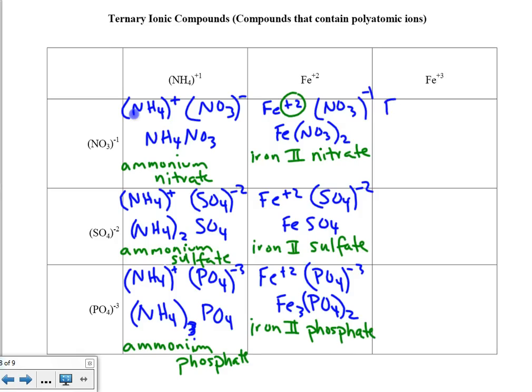The third and final column pairs up iron plus 3 with NO₃⁻¹. Crisscrossing, we get Fe(NO₃)₃. We need 3 of those nitrates to make a minus 3 overall charge to pair up with the iron plus 3. The name of this substance is iron 3 nitrate.